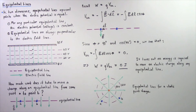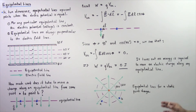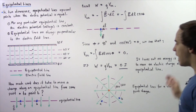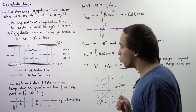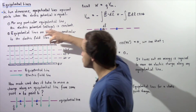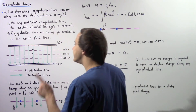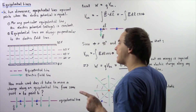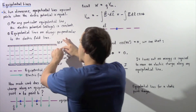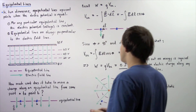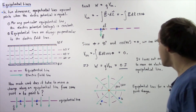So it turns out that no energy is required to move an electric charge along any particular Equipotential Line. It does take work to move our charge between Equipotential Lines, but it does not take any work to move our charge along an Equipotential Line.